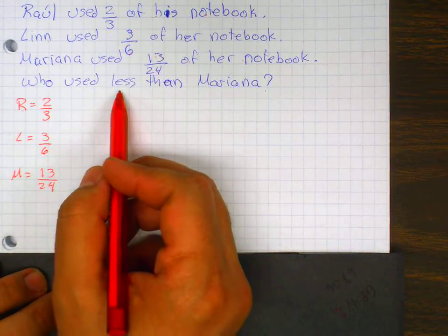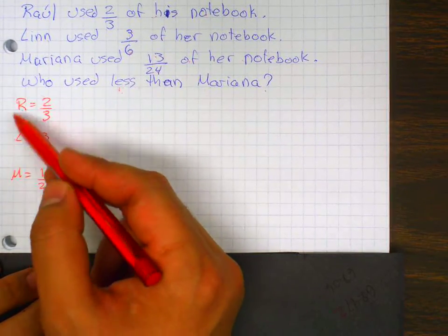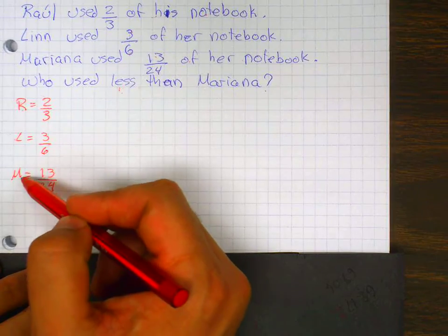So the question is, who used less than Mariana? So I need to know who, between Raul and Len, used less than that.